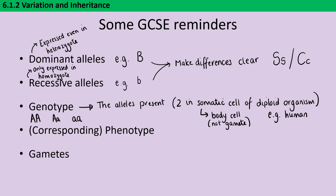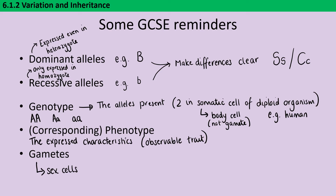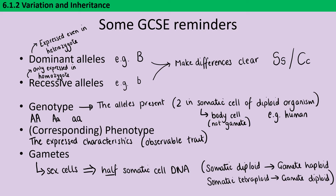Once we know which alleles are present, we can think about the corresponding phenotype — what trait is expressed as a result of that genotype — which is the thing we can actually observe and record. The gametes are the sex cells and have half the amount of DNA found in somatic cells. For a diploid organism like a human, which has two alleles per gene in body cells, gametes are haploid with only a single allele. For something like durum wheat, which is tetraploid with four alleles per gene, the gamete would be diploid with two alleles.